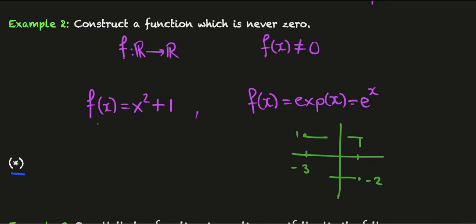The dumbest example I can think of or the simplest example I can think of a function which is never zero would just be to take f of x to be the function which is one everywhere. So the graph of this would just be the function y equals one. I don't think you can get much simpler than that.